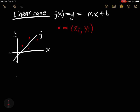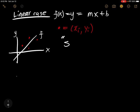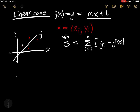We're trying to figure out the minimum value of s, which equals the sum over n data points of (y_i minus f(x_i)) squared. In essence, we're computing the residual between the data point and the function value, squaring it, and summing each one. We want to find the function f with constants m and b such that s is a minimum.